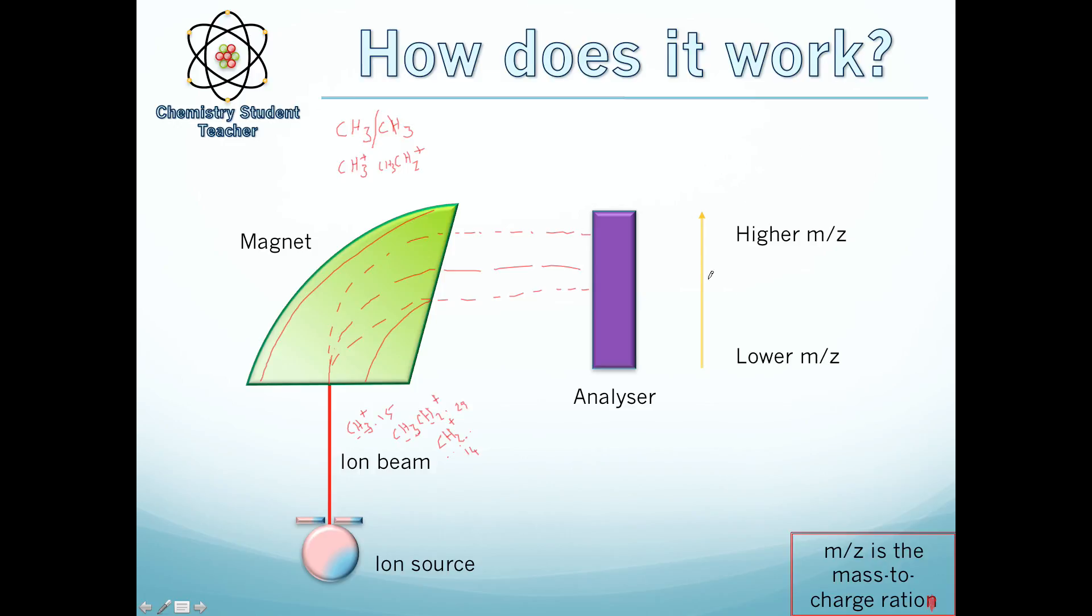Now here, I've told you that the higher m/z values appeared close to the top, they bend round less, and the lower m/z values bend round more. And the reason for that is just simple physics.